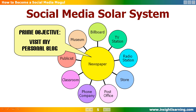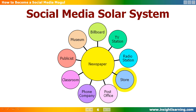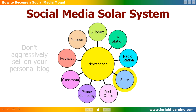People may be introduced to you through one of your satellites, but your prime objective is to get them to visit your home world. Once they land on your blog site, they'll find links to all your satellite sites and will be able to see your world the way you want them to see it. One of these links may be to your online store, where you will give them the opportunity to buy something from you or one of your affiliates — but it is simply a satellite.